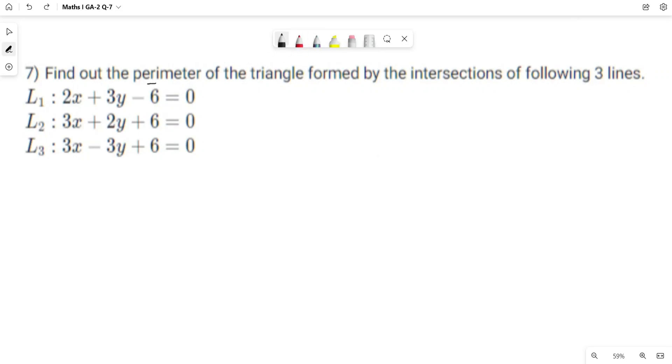Find out the perimeter of the triangle formed by the intersection of the following three lines.